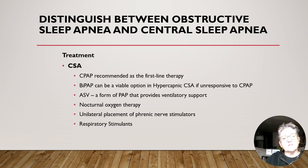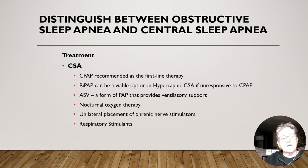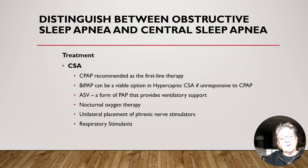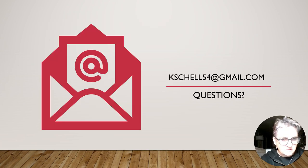In the treatment of central sleep apnea, CPAP is recommended as the first line of therapy. BiPAP can be a viable option in hypercapnic central sleep apnea if unresponsive to CPAP. ASV, a form of BiPAP that provides ventilatory support, may be needed. Nocturnal oxygen therapy may be helpful, as well as unilateral placement of a phrenic nerve stimulus or respiratory stimulus.